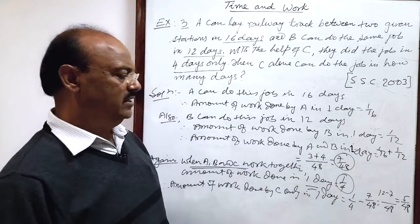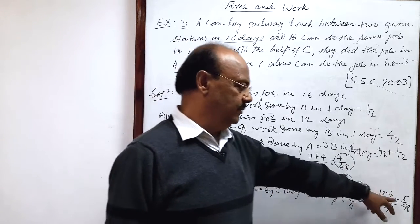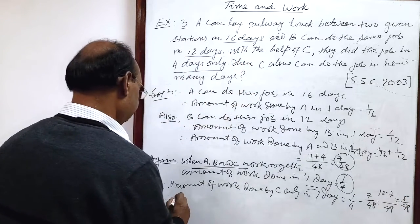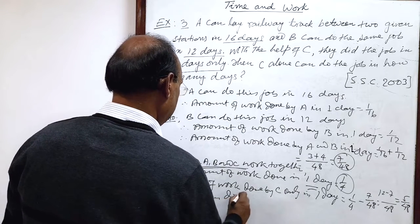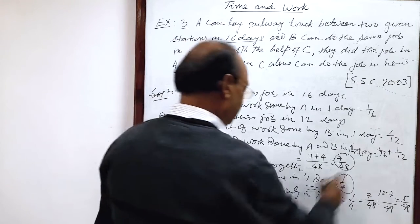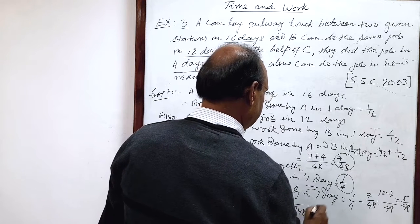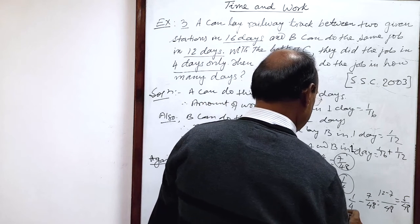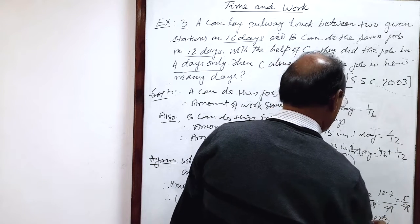So the number of days required for C for doing this job, reciprocal of this much means 48 by 5 that will be answer. Therefore, C only can do this job in how many days? Reciprocal of this much. 1 upon 5 by 48. That is 48 by 5. This is equal to 9 and 3 by 5 days. So this is the answer.